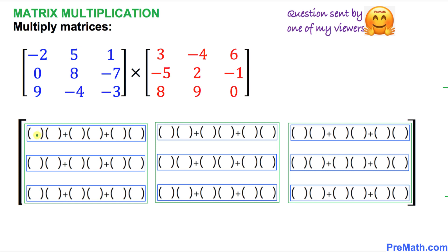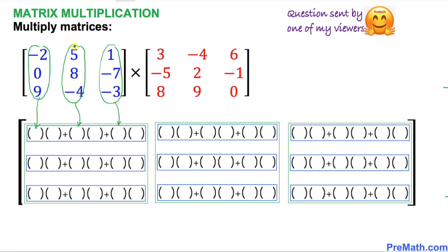I will show you how to fill in the blanks in these slots — where the blue numbers go and where the red numbers go. Starting with the left hand side blue matrix: the numbers in the first column go into the first slot, the second column goes up here, and the third column goes up here. Filling in the blanks, the blue numbers are: negative 2, 0, 9, 5, 8, negative 4, and then 1, negative 7, negative 3.